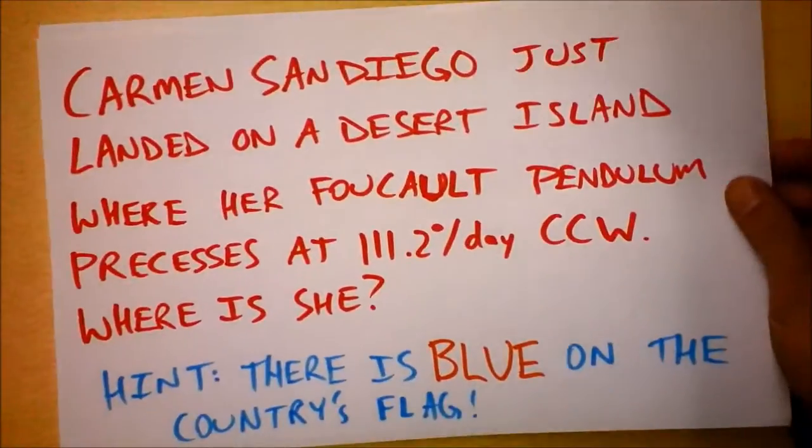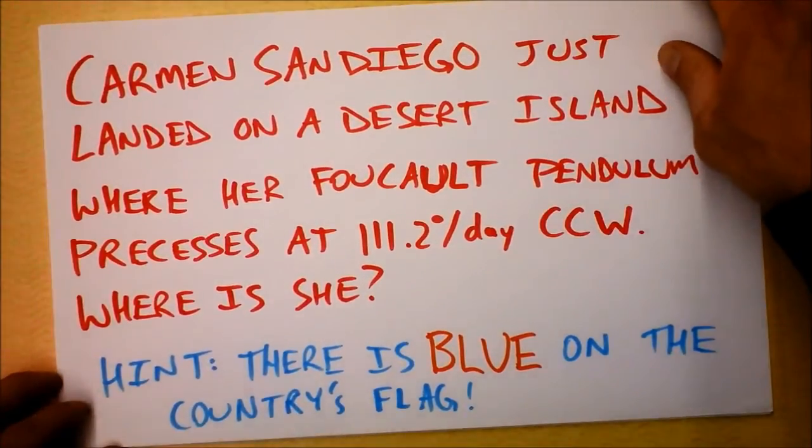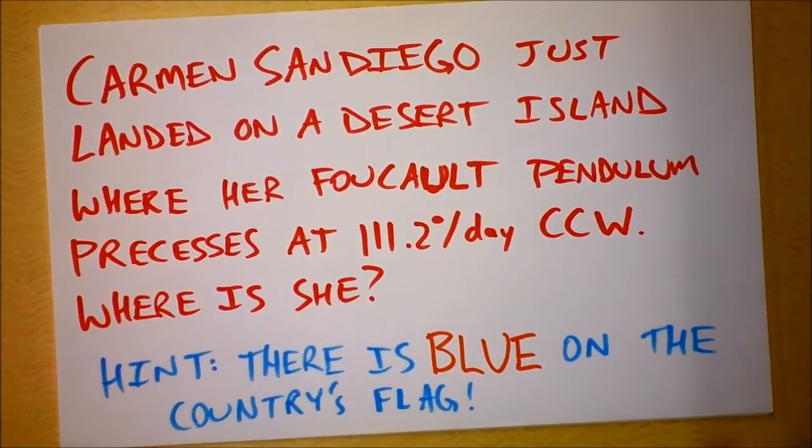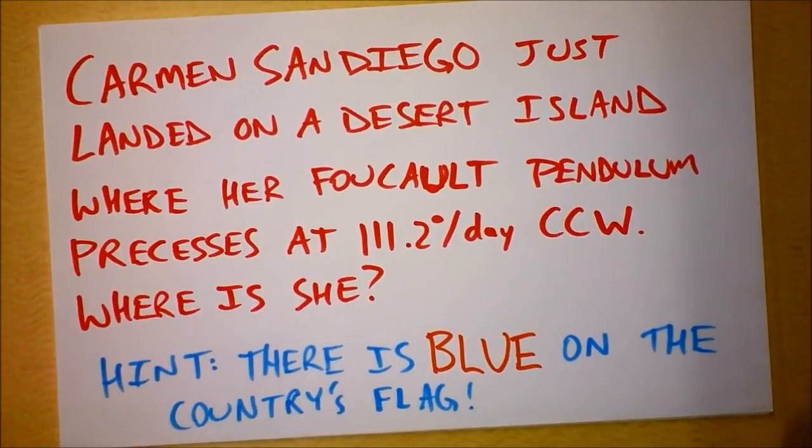Your homework is the notorious criminal Carmen Sandiego just landed on a desert island where her Foucault pendulum precesses at 111.2 degrees per day counterclockwise. Where is she? Hint, there is blue on the country's flag.